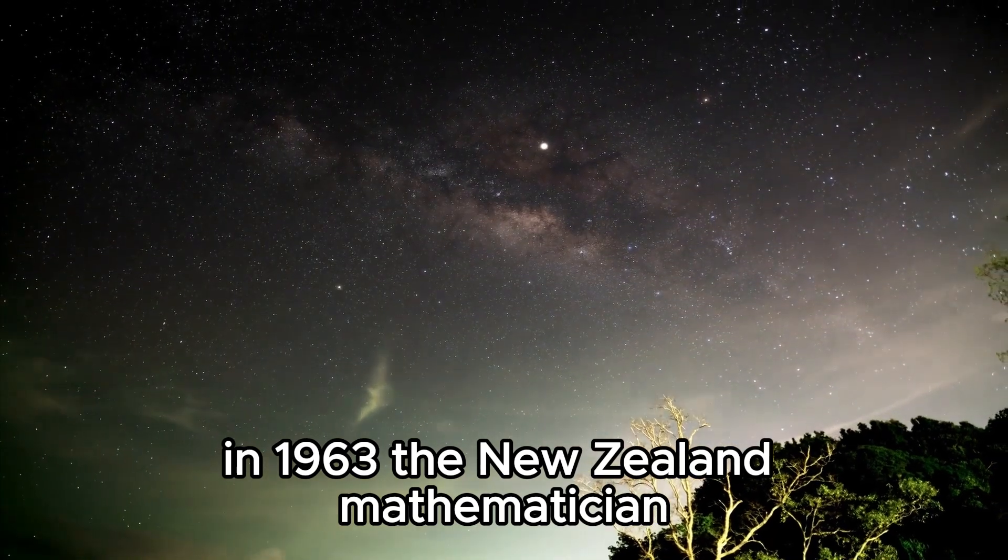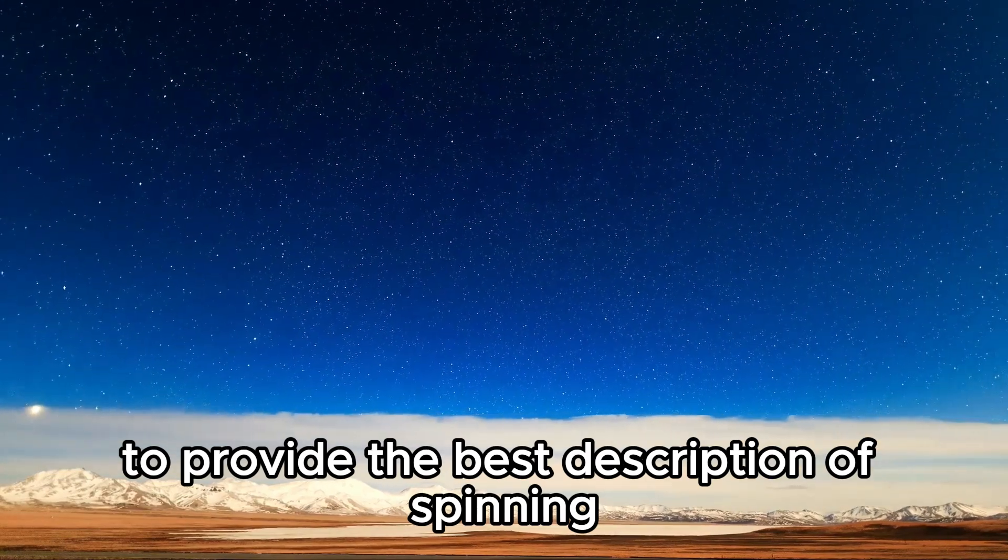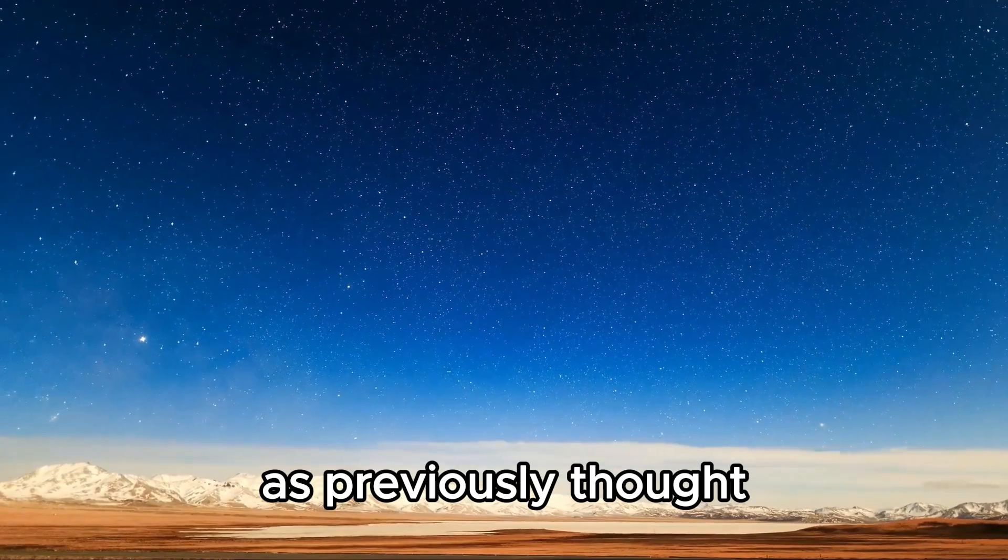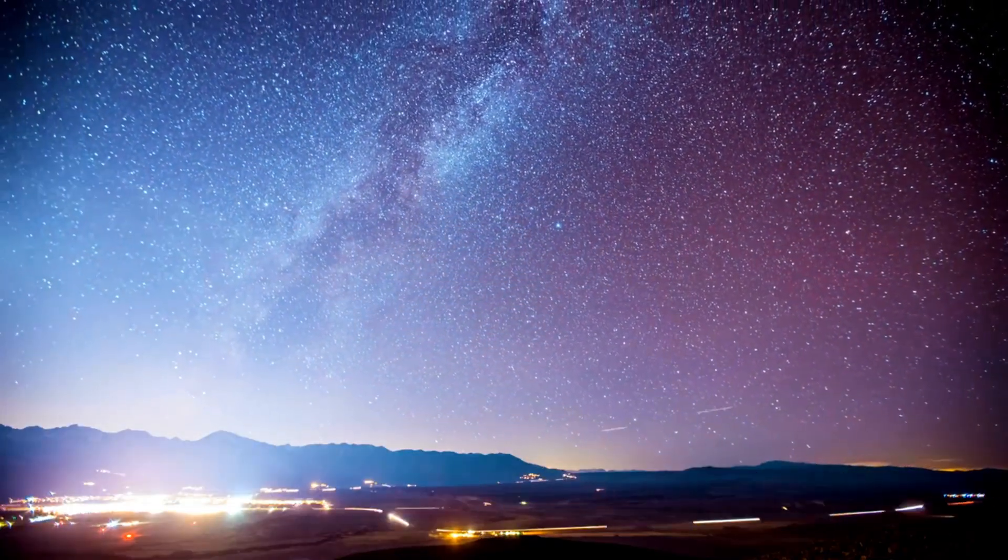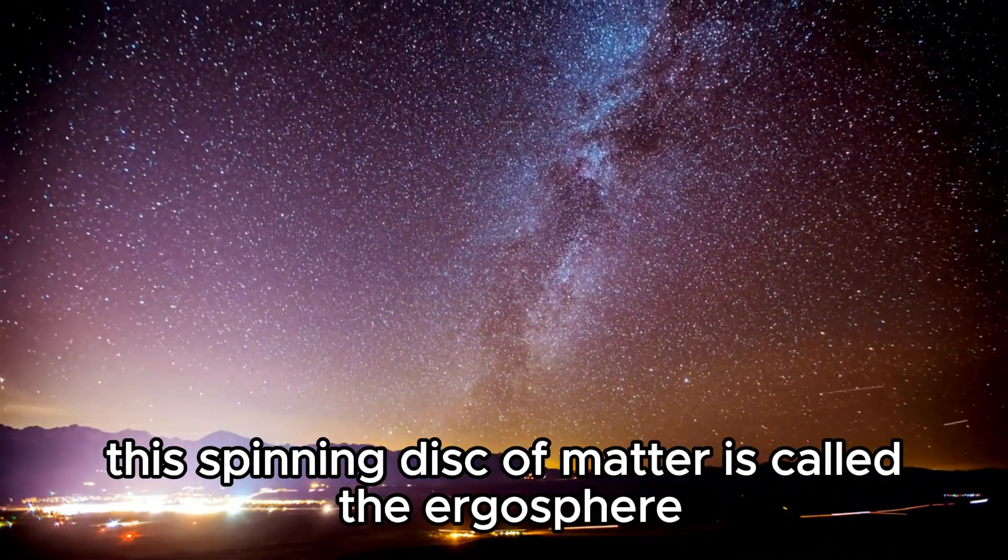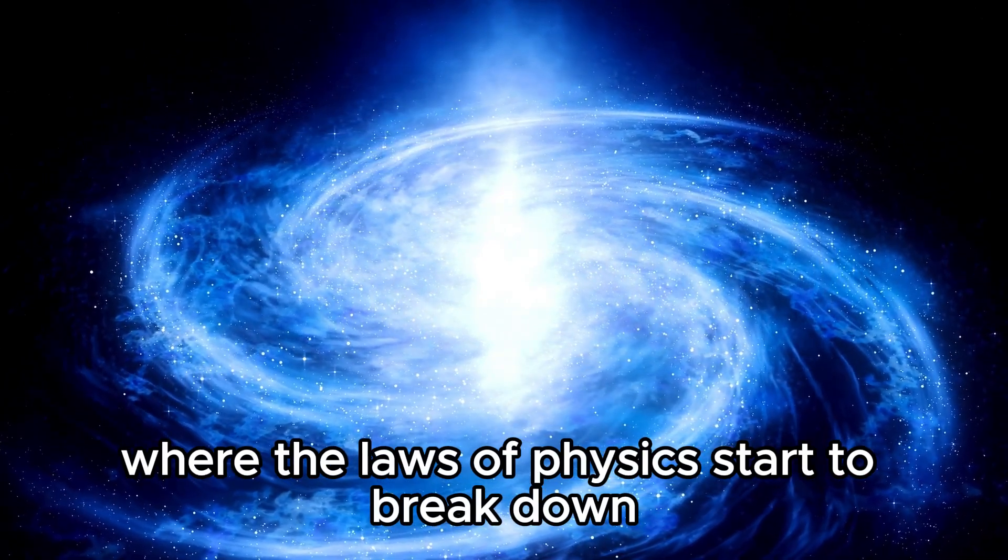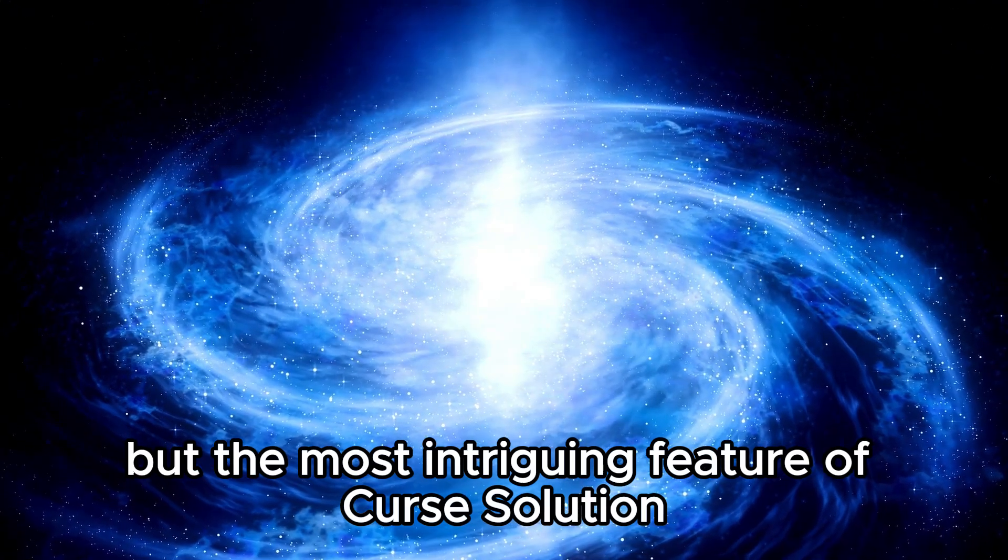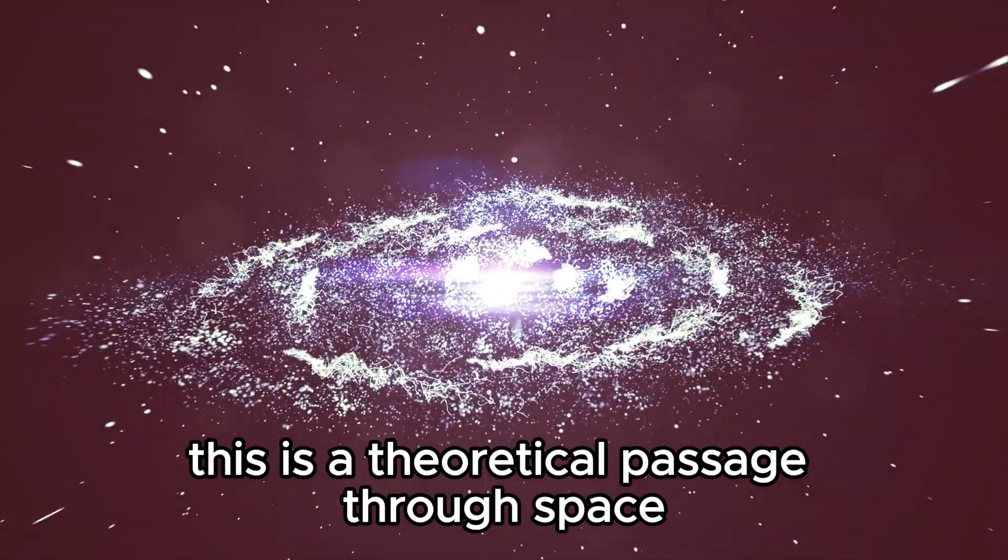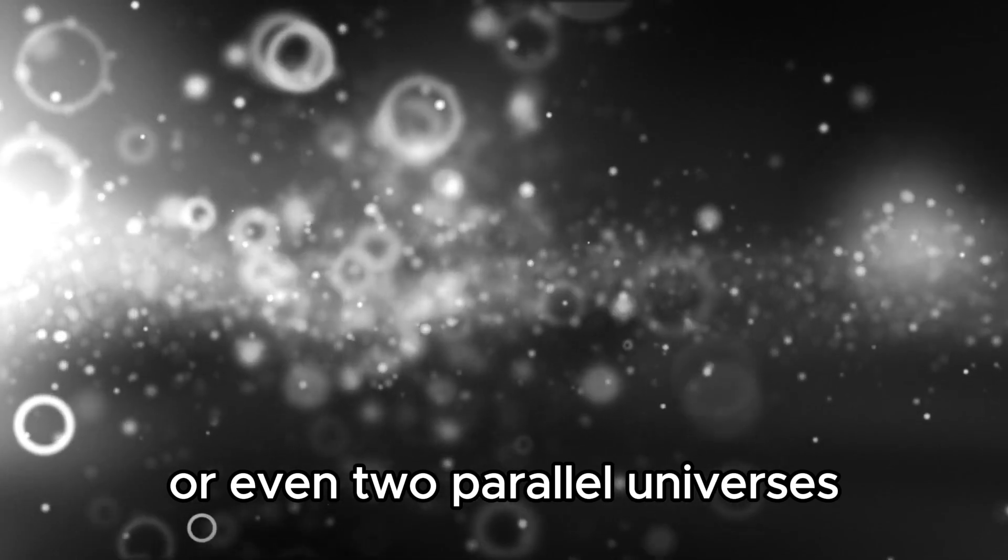In 1963, the New Zealand mathematician Roy Kerr used Einstein's equations of gravity to provide the best description of spinning black holes. Kerr showed that a spinning black hole wouldn't collapse into a point as previously thought, but to a ring of fire or a thin disk. The disk would be spinning so rapidly that centrifugal forces would keep it from collapsing. This spinning disk of matter is called the ergosphere, and it is the region surrounding the black hole where the laws of physics start to break down. But the most intriguing feature of Kerr's solution was that it predicted the existence of an Einstein-Rosen bridge, also known as a wormhole.